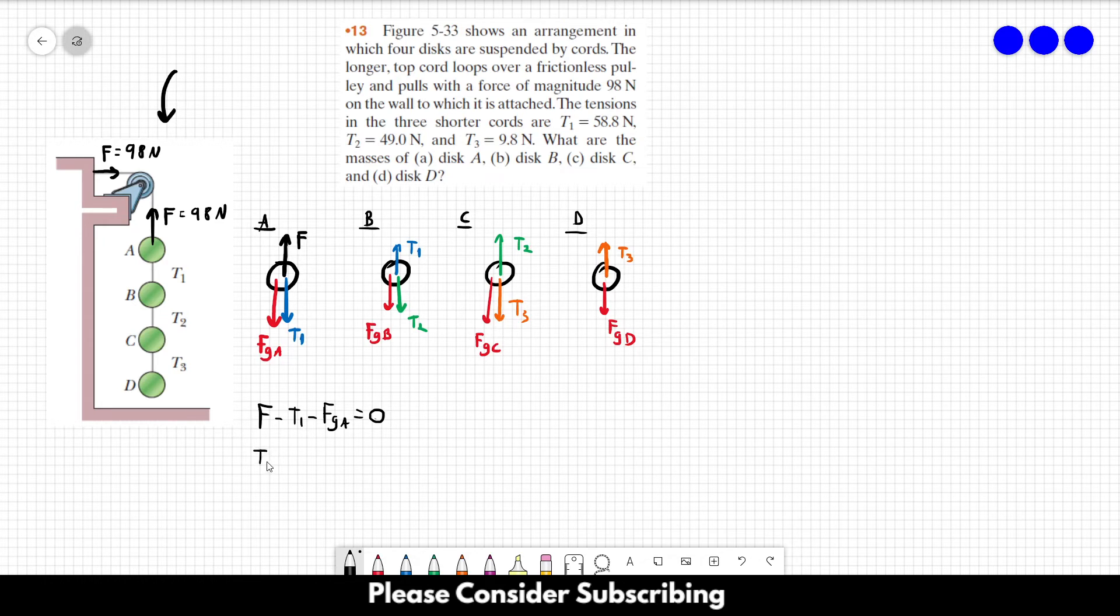So for disc B, we have T1 minus T2 minus FGB, which is equal to zero. We also have that T2 minus T3 minus FGC equals zero. And we have that T3 minus FGD equals zero. So we have to solve those equations to find the masses. It is pretty simple.